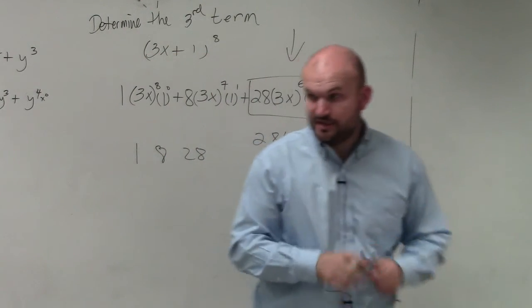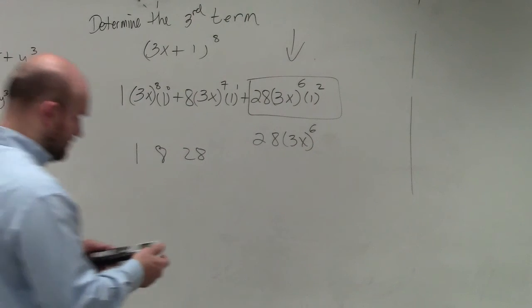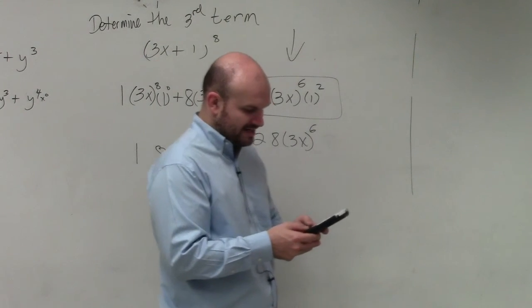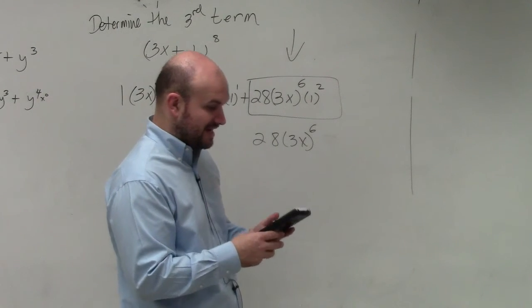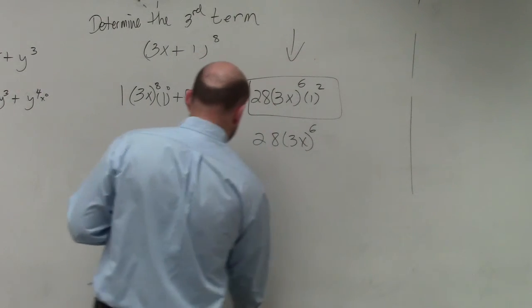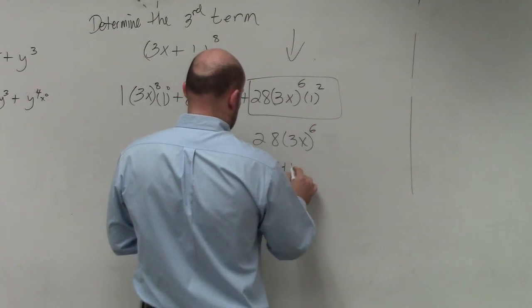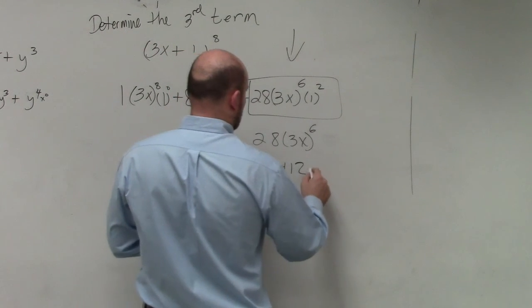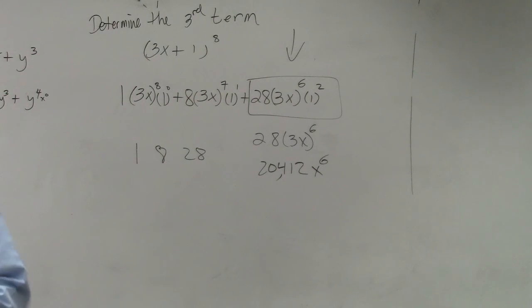So now what I need to do is take a calculator, which has a big power. Can I borrow your calculator? Just switch it up. And then what I'm going to do is I'm going to take 3, raise it to the sixth power, and then multiply that by 28. And yes, it's a big number, and your final answer is 20,412 x to the sixth power, and that's what your middle third term would be.